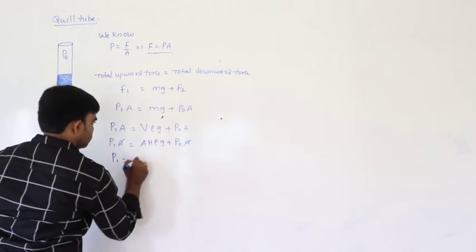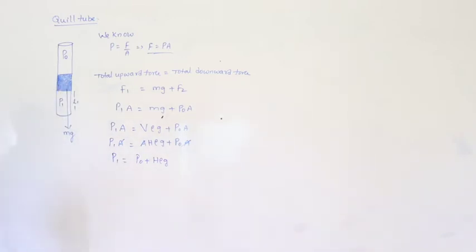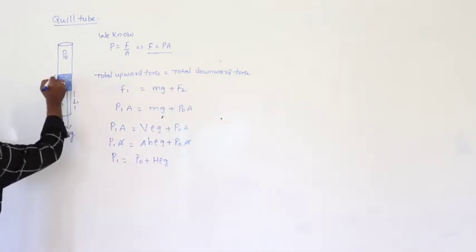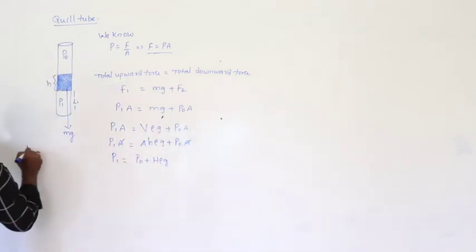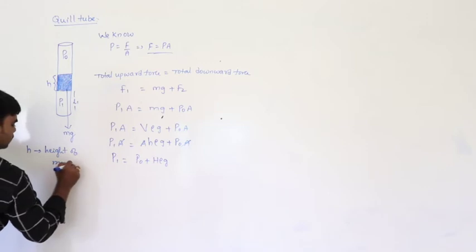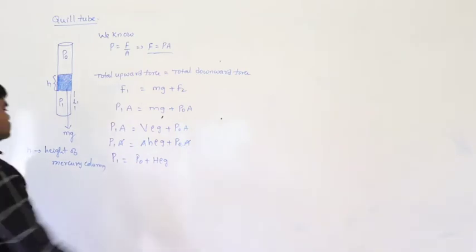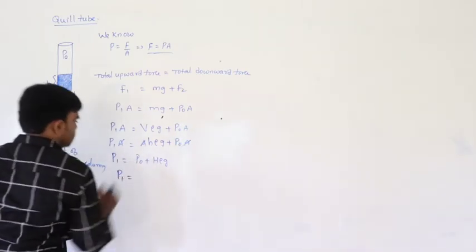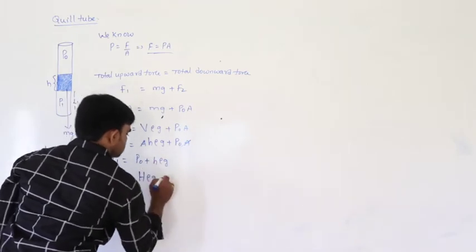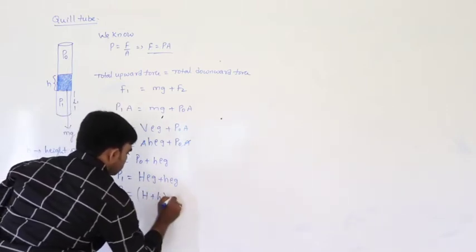Therefore P1 = P₀ + hρg, where small h is the height of the mercury column. Since P₀ can be written as Hρg (capital H being the barometric height), P1 = (H + h)ρg.